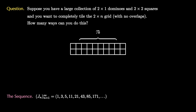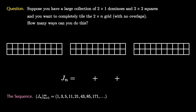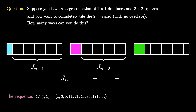If we let j sub n be the number of ways of tiling the n board, we see that we can split the number of tilings into three disjoint situations based on the first tile. We add three situations together: first where we have a vertical tile, or we start with two horizontal tiles, or we start with a square tile. In the first instance with a vertical tile, there are j sub n minus 1 ways to tile the rest, and in the other two situations we're left with an n minus 2 board, so there are j sub n minus 2 ways to tile the remaining board.